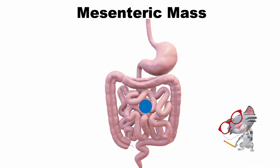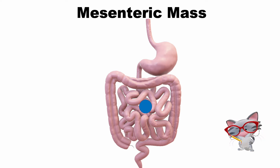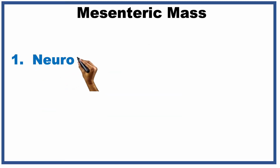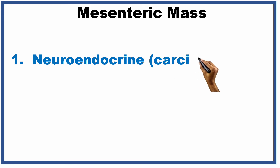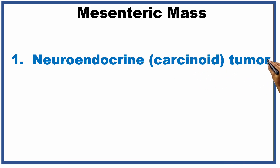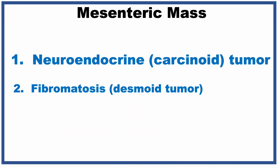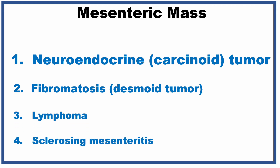There's a relatively short checklist based on how it looks. Number one, a neuroendocrine or carcinoid tumor of the small intestines. Less likely, fibromatosis or desmoid tumor. Or rarely, lymphoma and sclerosing mesenteritis.